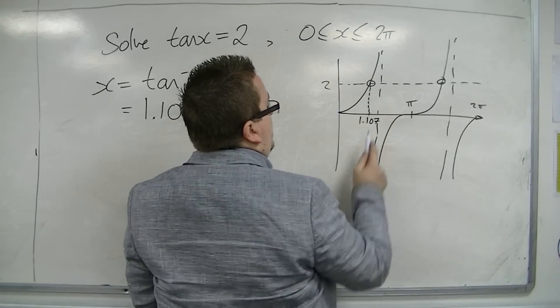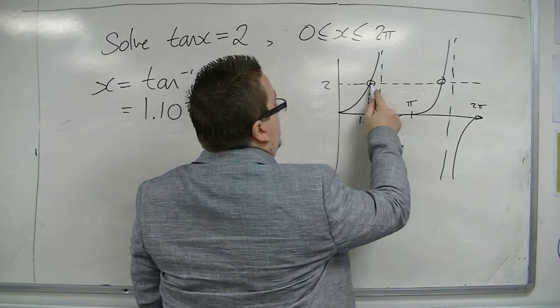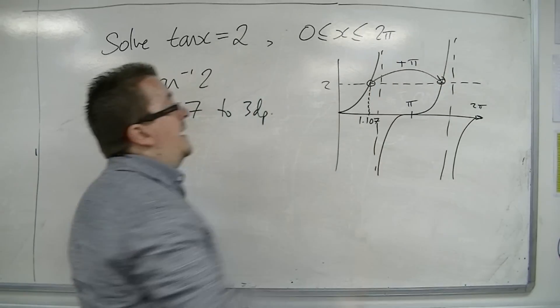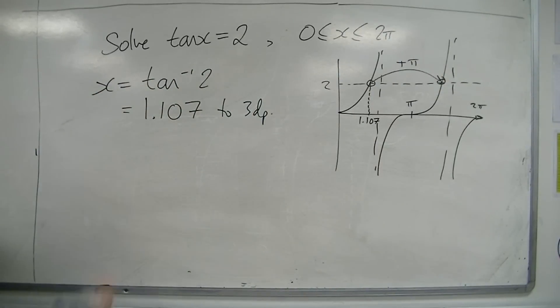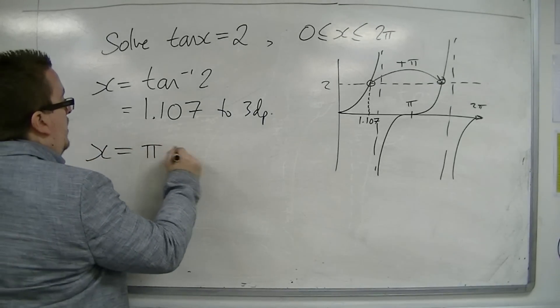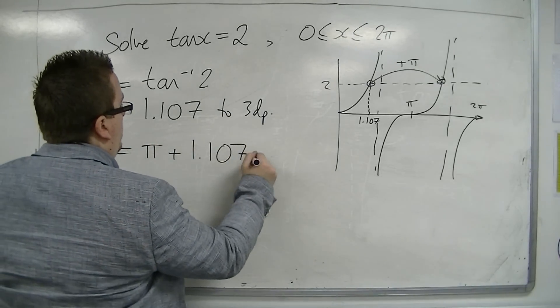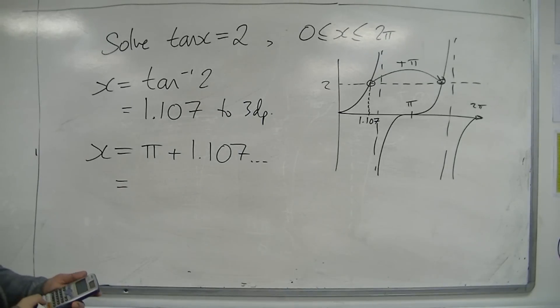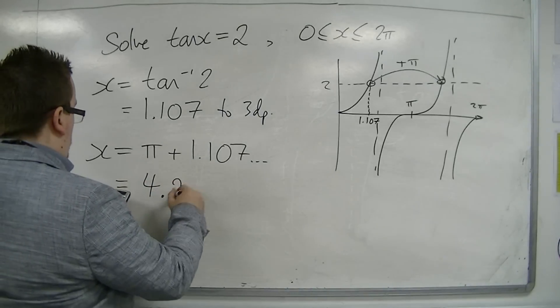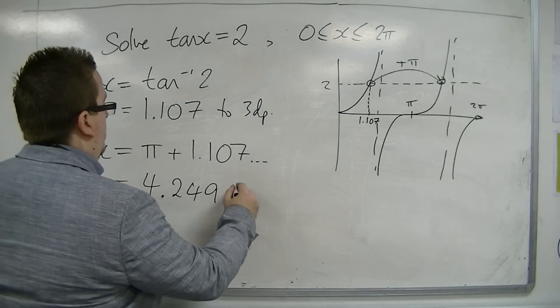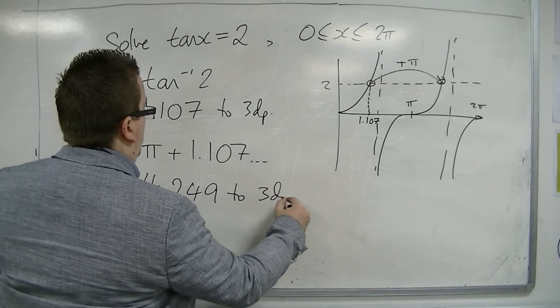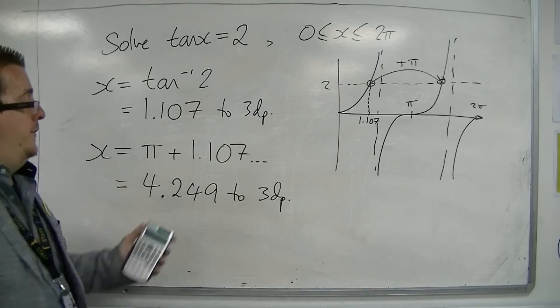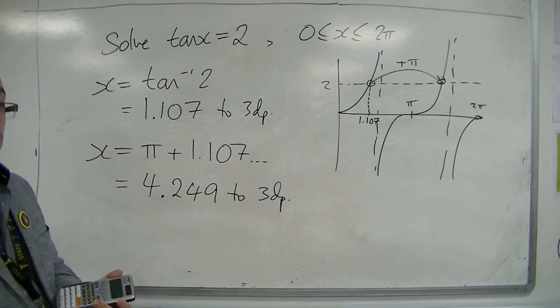So if I add π to this answer, then I can get to the next value. So the next value is π plus the 1.107. So add π to it, and you get 4.249 to three decimal places. So making sure I'm using the full calculator display that I got for that answer, in order to give my final answers there.